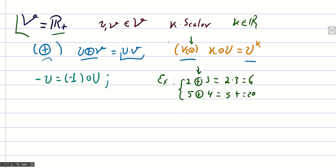And with respect to the scalar product, for example, 2 times 3 will be 3 squared, that equals 9, and 3 times 2 will be 2 cubed, which equals 8.